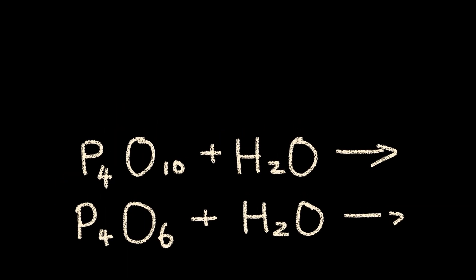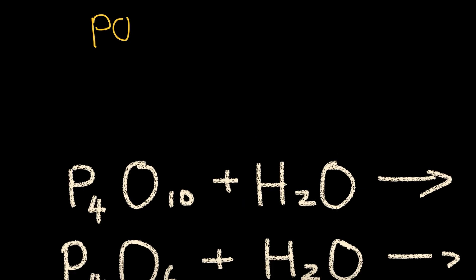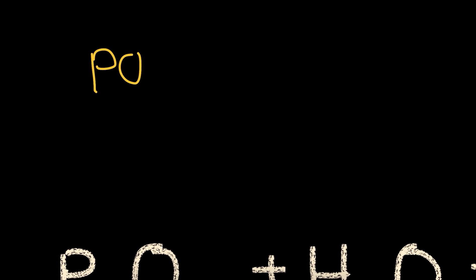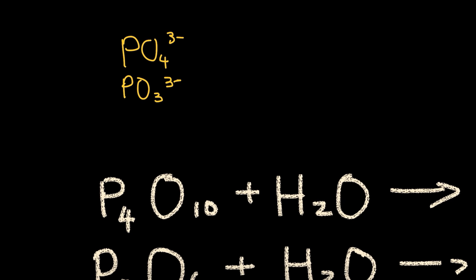Phosphorus and oxygen has two very popular oxyanions. This is the first one, phosphate and phosphite. We know the product will be an oxyanion, which will be one of these plus a hydrogen. Which one of these is it?